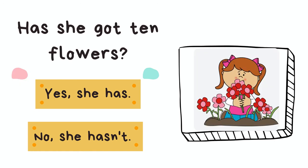Has she got ten flowers? Has she got ten flowers? Which should be the answer? Let's count together. One, two, three, four, five, six, seven. Oh no, she hasn't. No, she hasn't. She has got seven flowers.